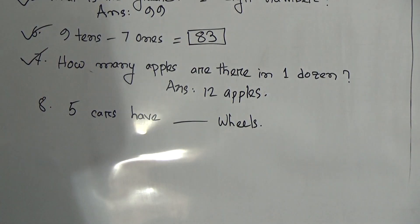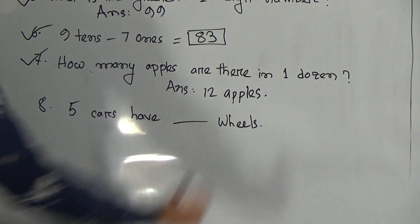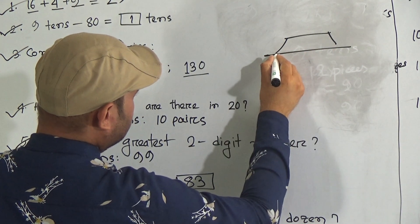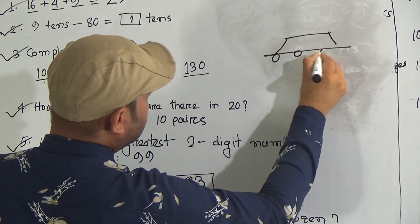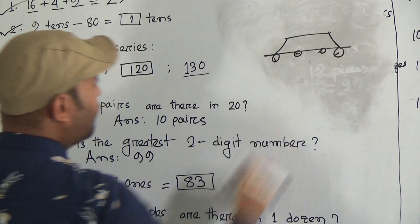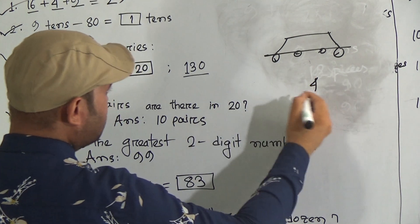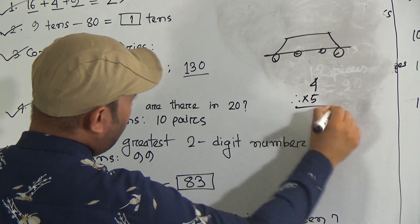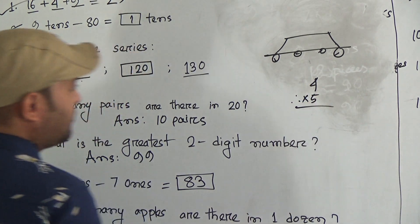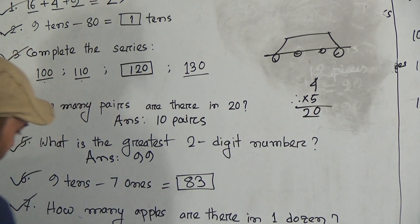Question number 10: 5 cars have how many wheels? Do you know how many wheels a car has? A car has four wheels. Therefore, five cars means you have to use the five-times table: 5 fours are 20. So five cars have 20 wheels.